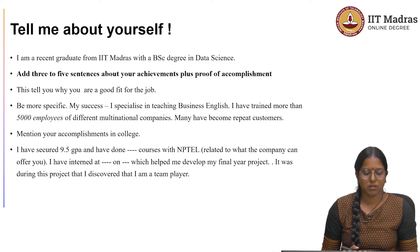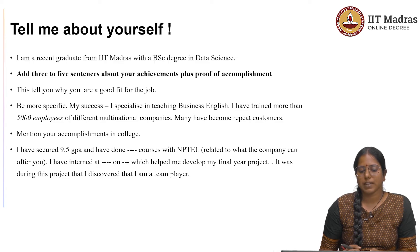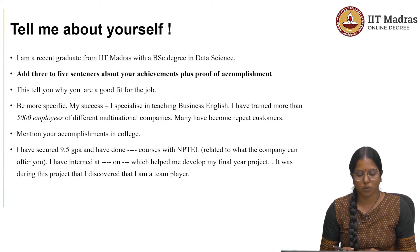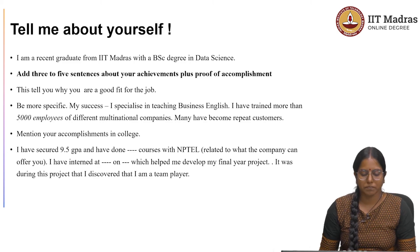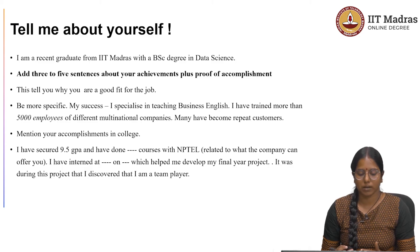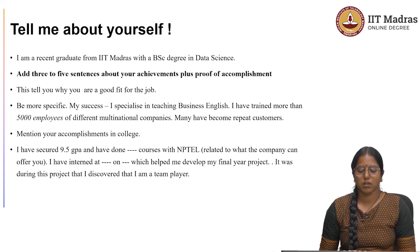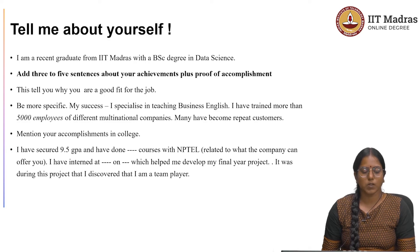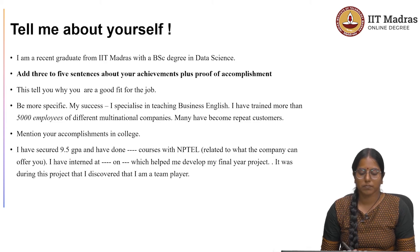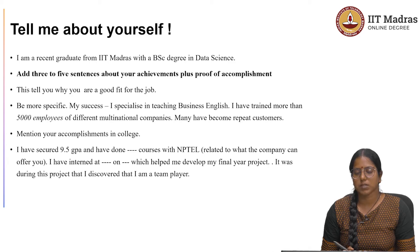Now comes the second section — adding three to five lines about your achievements plus proof of accomplishment. Here you are going to tell why you are a good fit for this job. In this particular section, you need to be more specific; you need to give quantifiable numbers. When I talk about my success, I should not be random and vague — I should be very specific. Therefore, I would say something like: I specialize in teaching business English. I have trained more than 5,000 employees of different multinational companies. When I say 5,000 employees, I am giving a quantifiable number. And many have become repeat customers, which means people value the service that I have provided them.